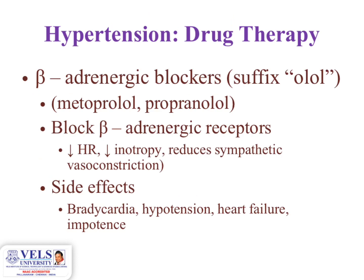Beta-adrenergic blockers (e.g., metoprolol, propranolol, atenolol, and labetalol) work by blocking beta-adrenergic receptors, decreasing heart rate and inotropy, and reducing sympathetic vasoconstriction. Side effects include bradycardia, hypotension, heart failure, and impotence.